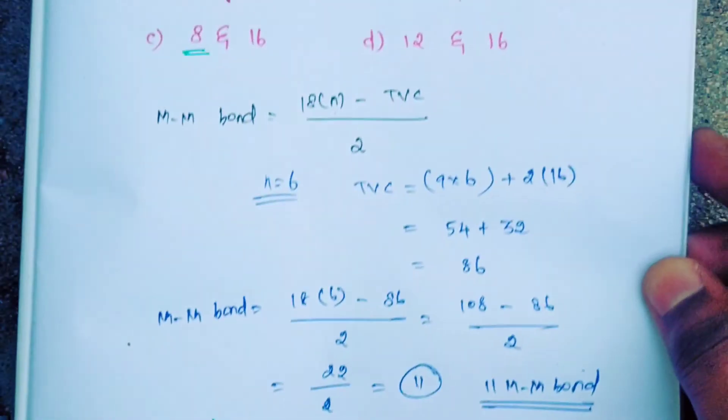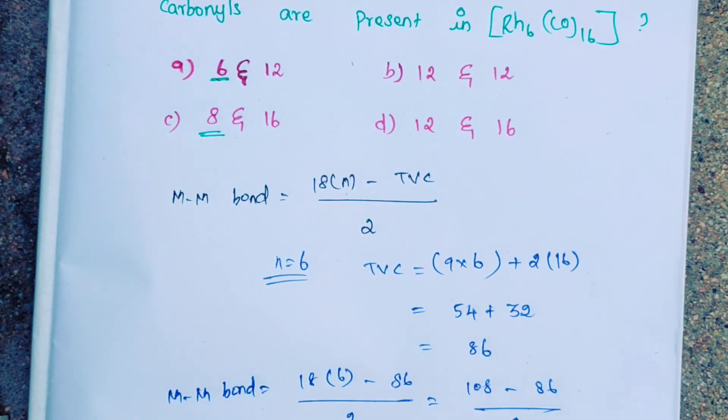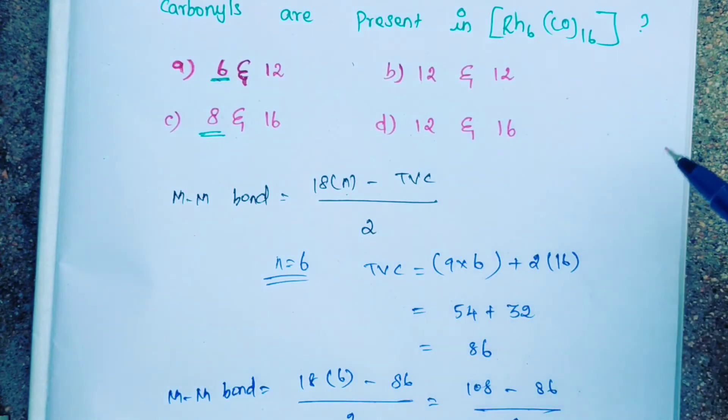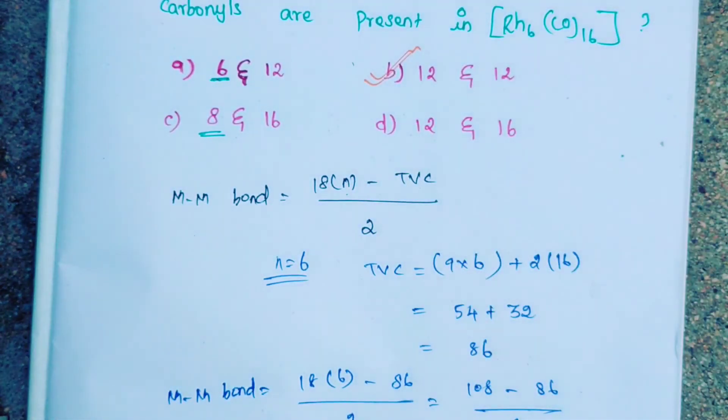Our correct answer for this question is option B: 12 metal-metal bonds and 12 terminal carbonyls. Option B is the correct answer.